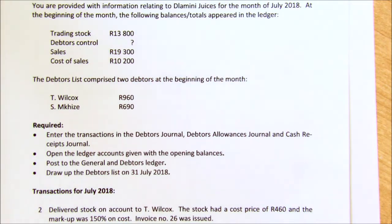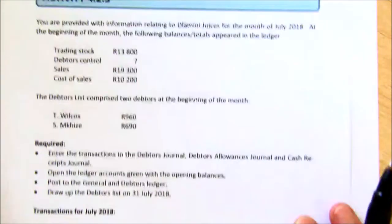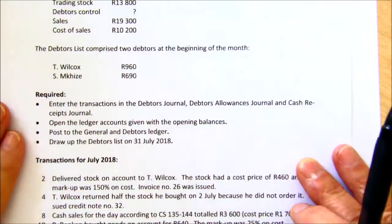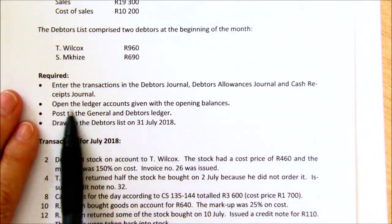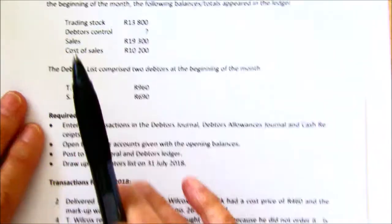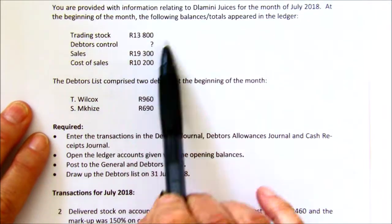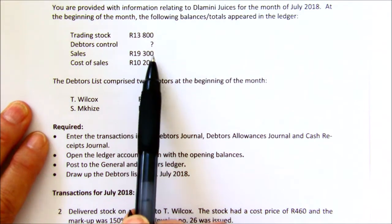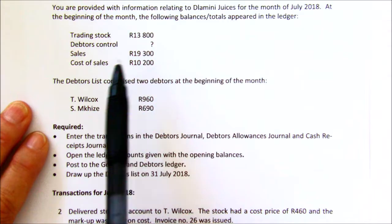Now let's continue with the posting of the debtors' journal, the debtors' allowances journal, and the cash receipts journal that you did in Activity 4.23. And that is what they're asking you here to do. You are given some opening balances — it's not a full ledger this time, it's only some ledger accounts.